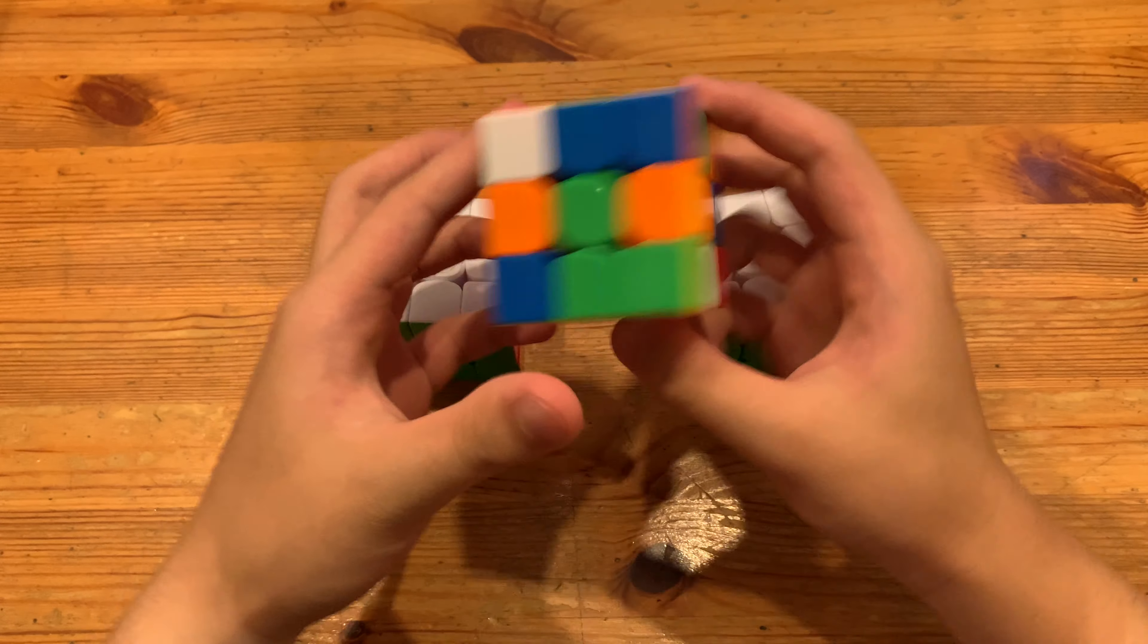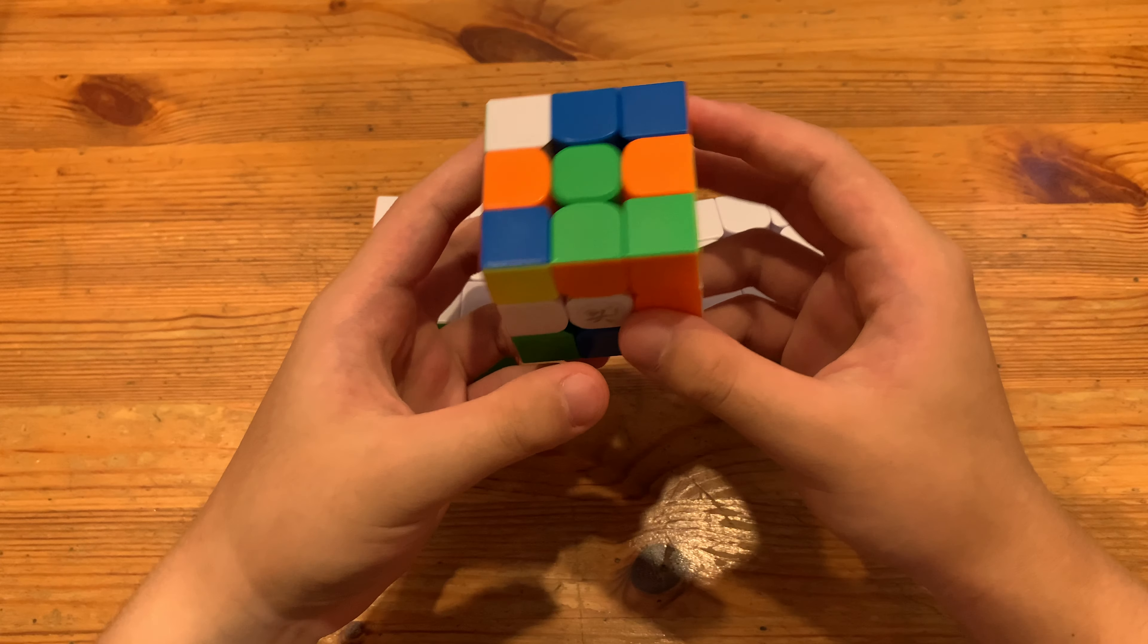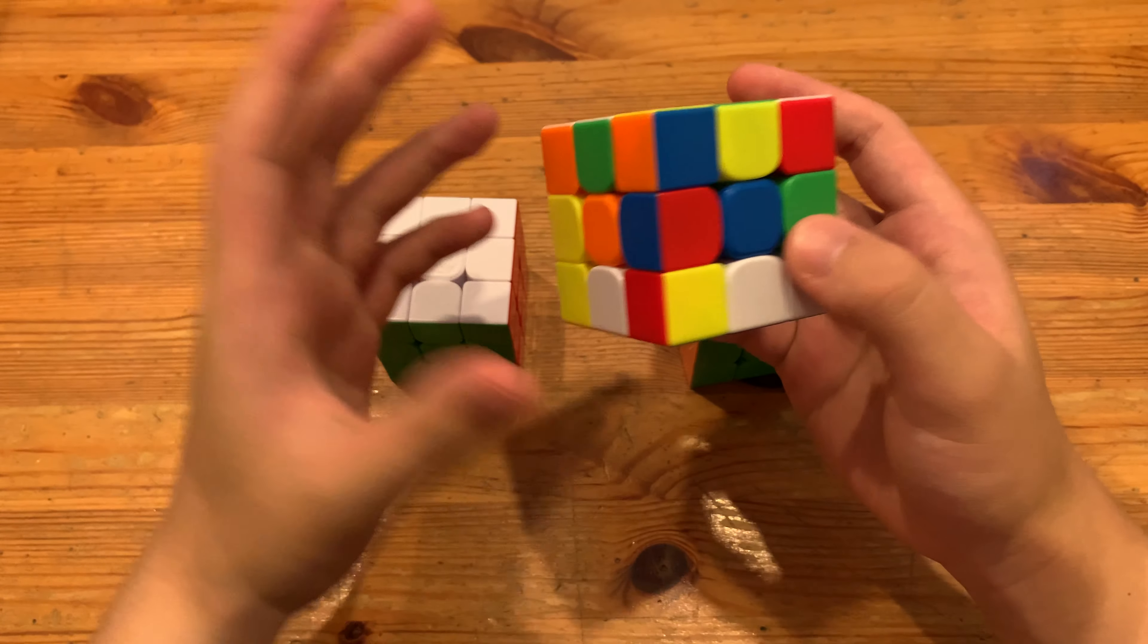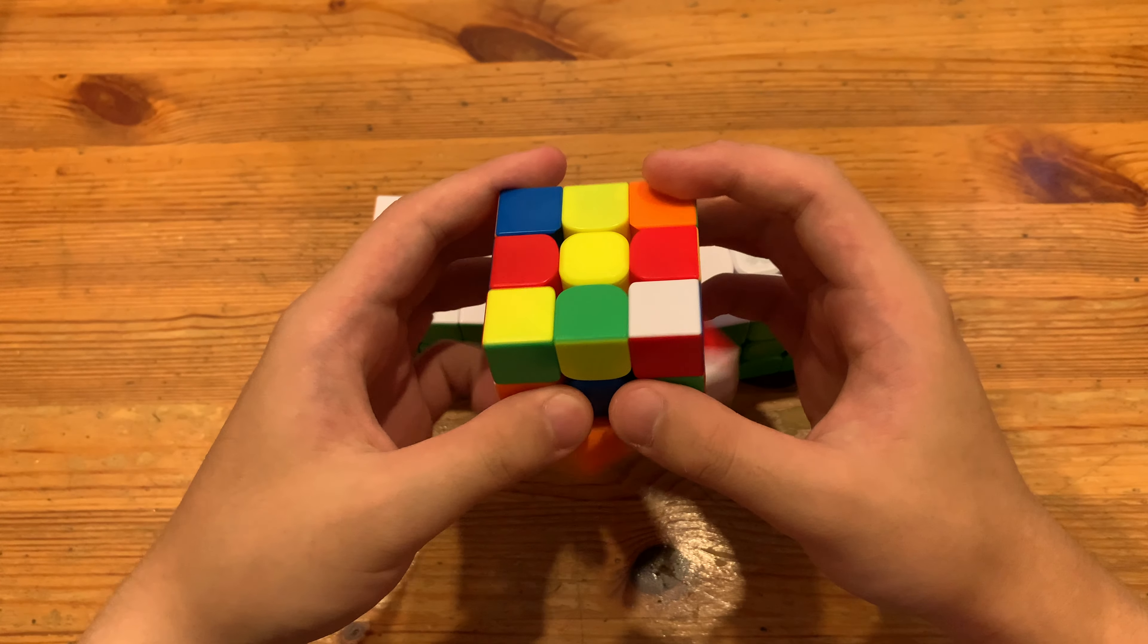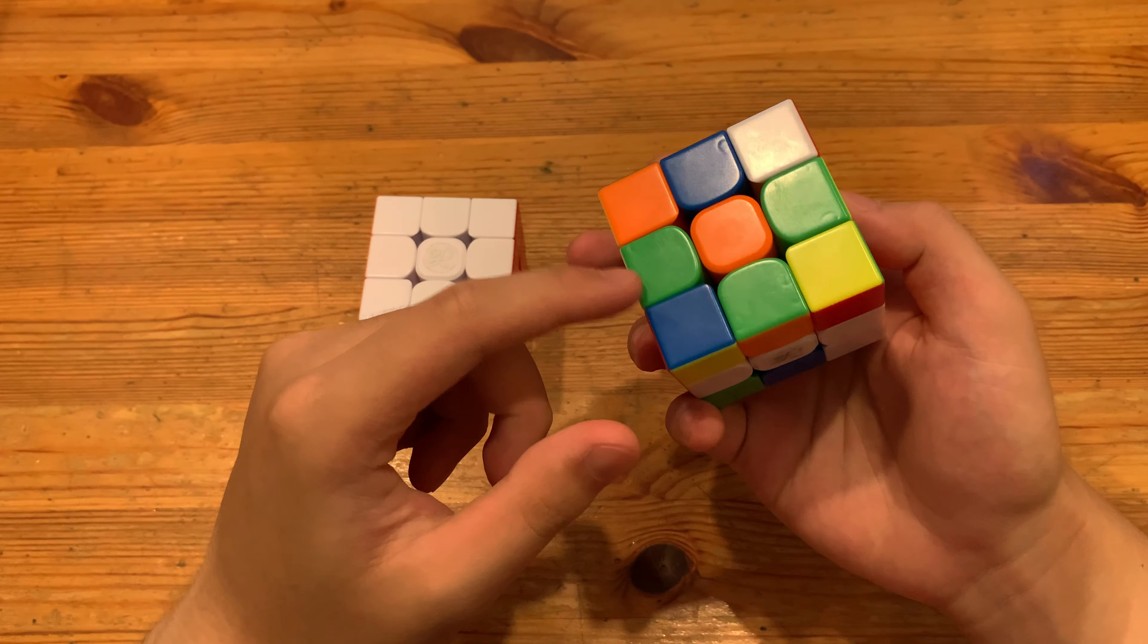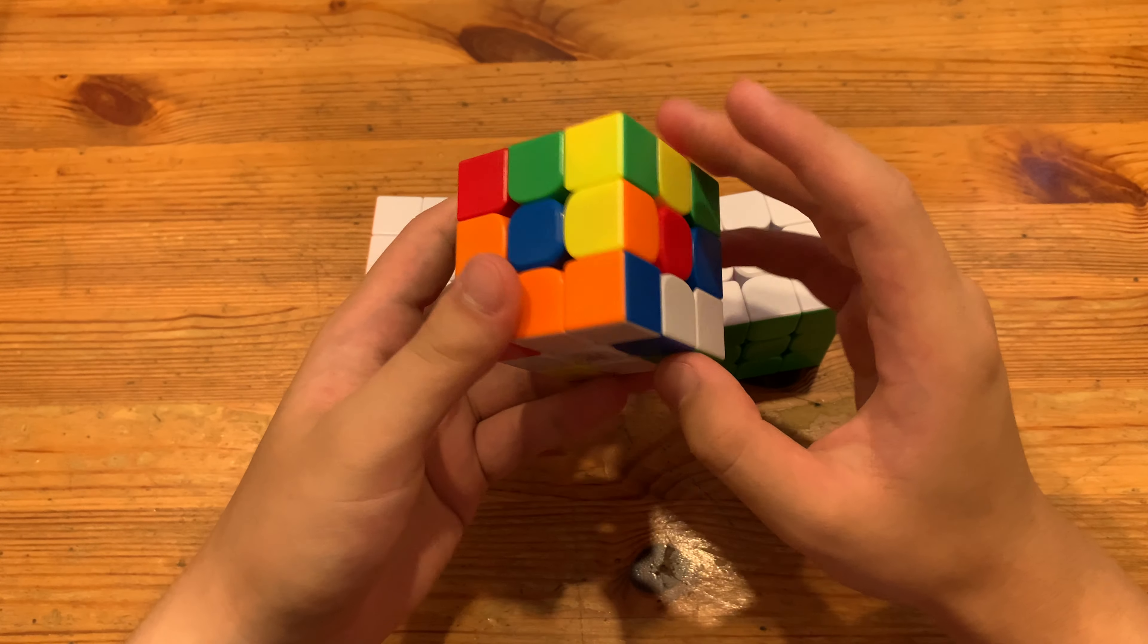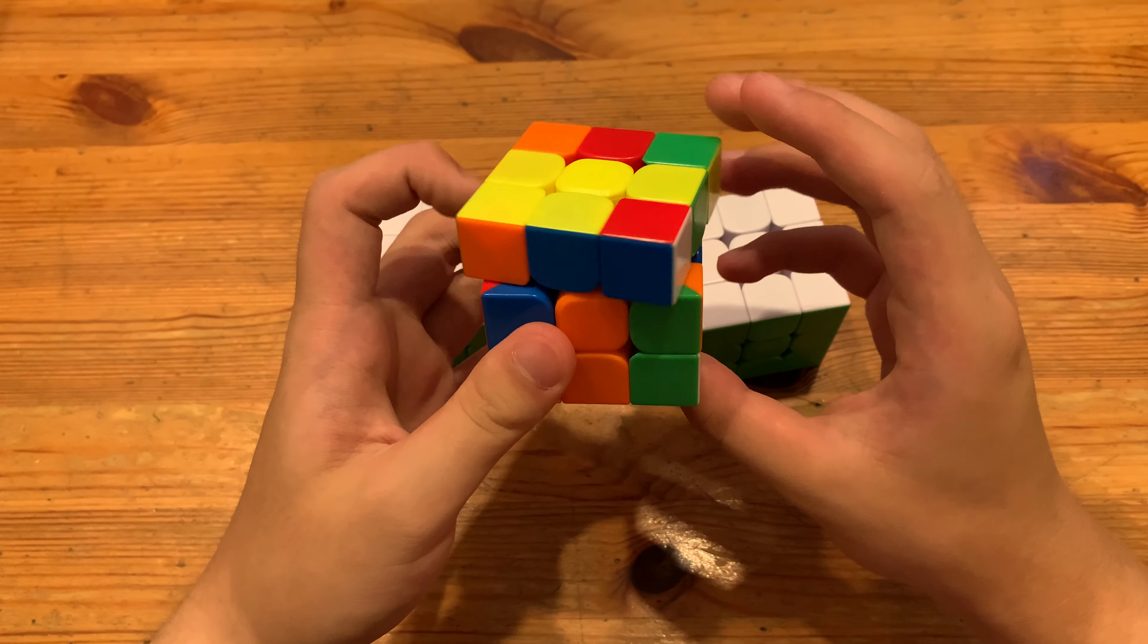Now for this second scramble. I'll likely just do the blue and red for first pair. For cross, what I'll do is L prime, D, now I'll move this cross edge over here. And then F prime to insert this cross edge. Finally, insert this green cross edge with L prime. And then to solve this cross edge, I'll do R. And then here I'll do a wide U prime and then U prime R to solve this pair into the back right.